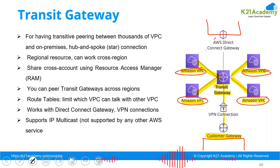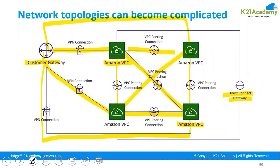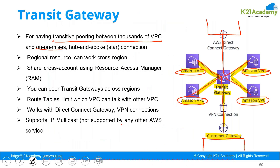Similarly, if there is a location with AWS Direct Connect, rather than creating individual connections to each VPC, only one connectivity from Direct Connect to the Transit Gateway is required. This way you can simplify connectivity for transitive peering between thousands of VPCs and on-premises locations. It becomes transitive — being connected to the Transit Gateway means you can communicate with everything else connected to it, whereas VPC peerings alone were non-transitive.